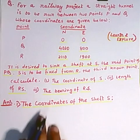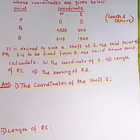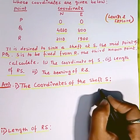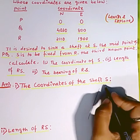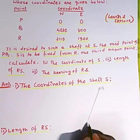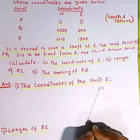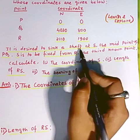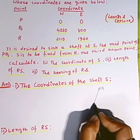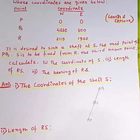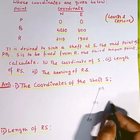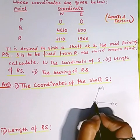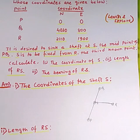To find the coordinate of that shaft, I am first drawing the tunnel position. Suppose this is my tunnel — here is P and here is Q. It is told that the shaft S is the midpoint of P and Q, so S is the midpoint between P and Q. It is fixed from a station R. You know about a shaft — a shaft is nothing but an opening which is provided internally.